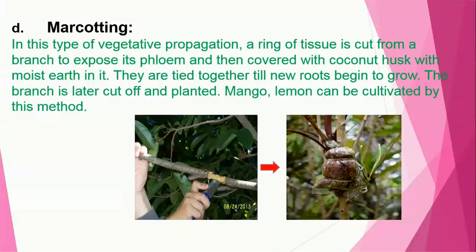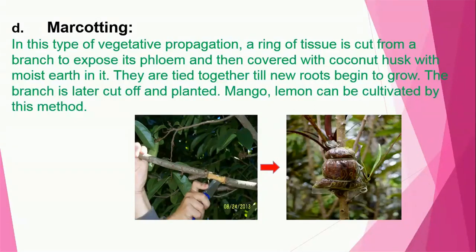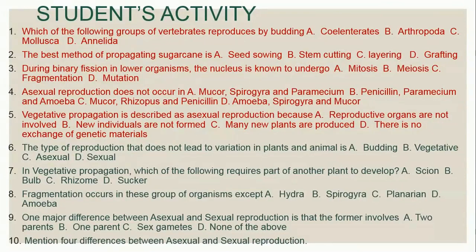The last method is marcotting. In this type of vegetative propagation, a ring of tissue is cut from a branch to expose the phloem. The phloem is the part that translocates food from the leaves to other parts of the plant. The exposed part is then covered with moist coconut husk tied around it. New roots begin to grow at the exposed point, and the branch is later cut off and replanted. Mango and lemon can be cultivated by this method.